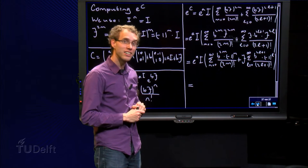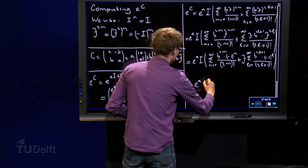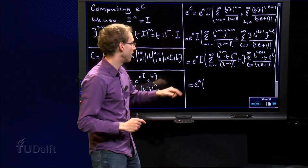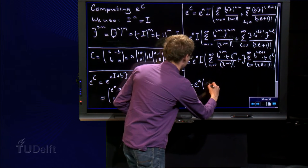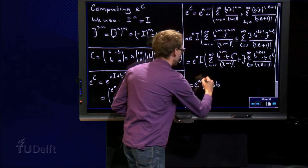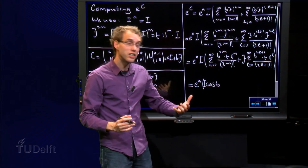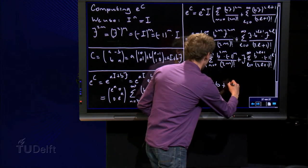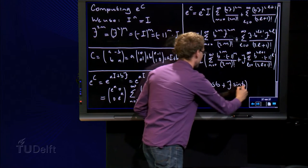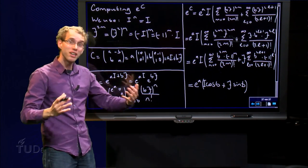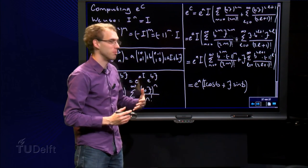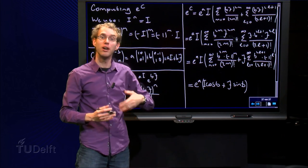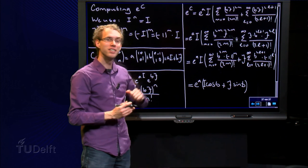Now we recognize something again. We leave the e to the power a here. In the even terms we recognize the Taylor series of the cosine of b, so we get cosine of b times the identity matrix. In the odd terms we recognize the Taylor series of the sine of b, so we get sine of b times j. The final formula is not hard at all, and moreover it is very easy to remember because it is very similar to e to the power z where z equals a plus bi, a complex number. That is how you can memorize e to the power c.